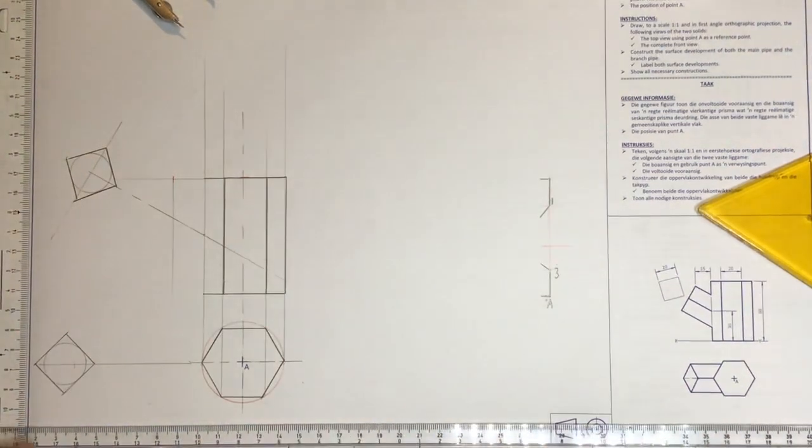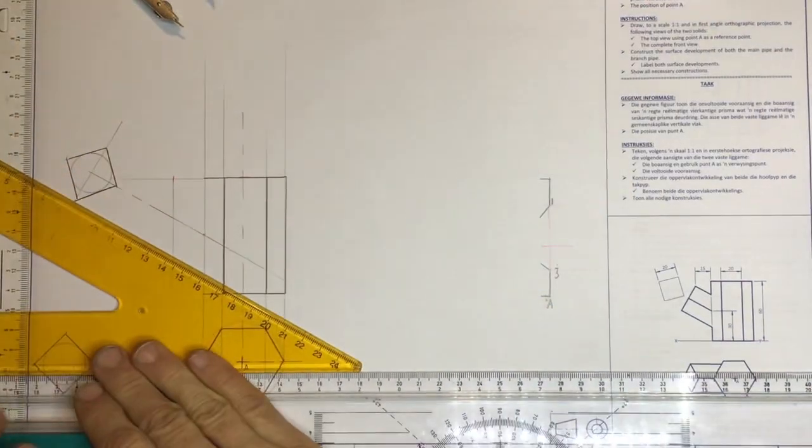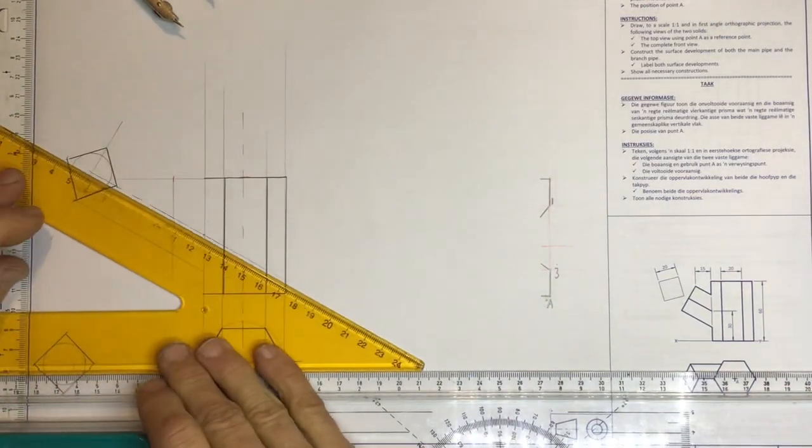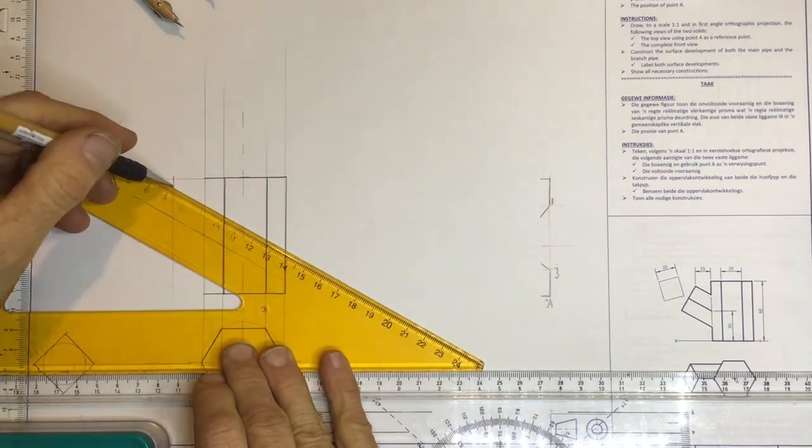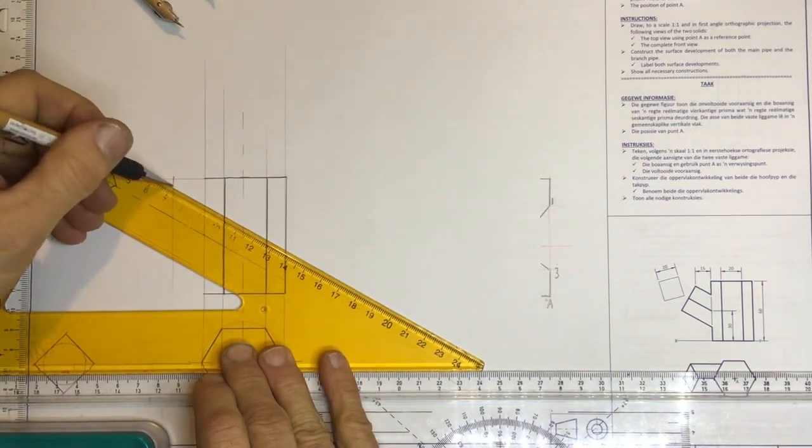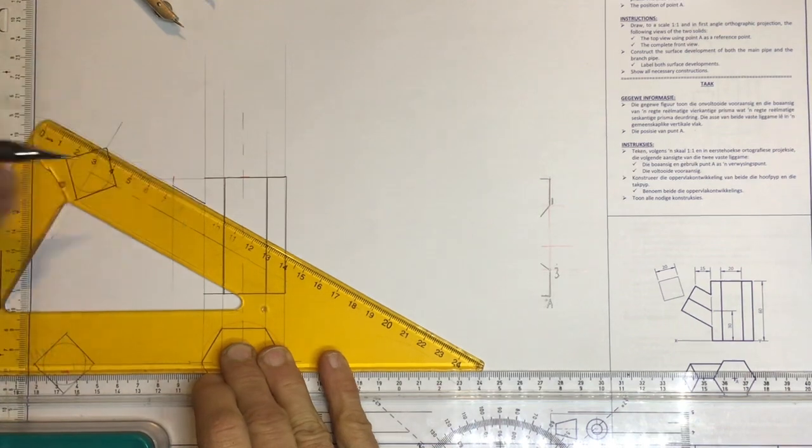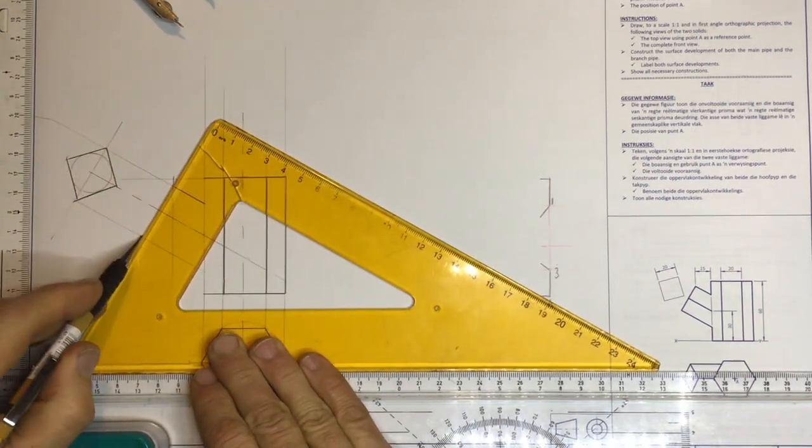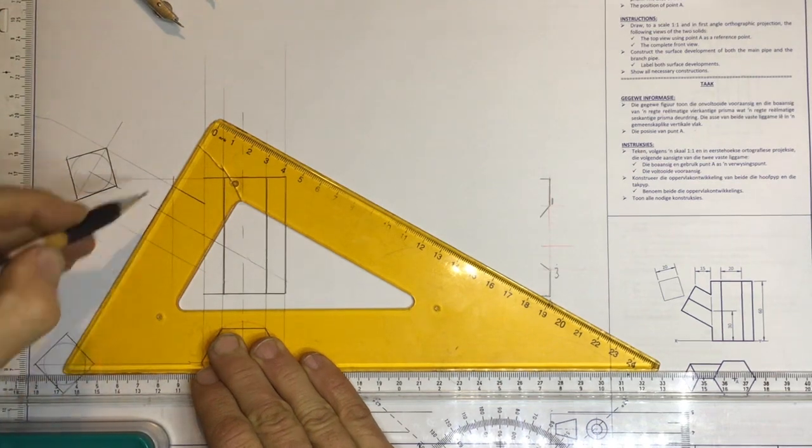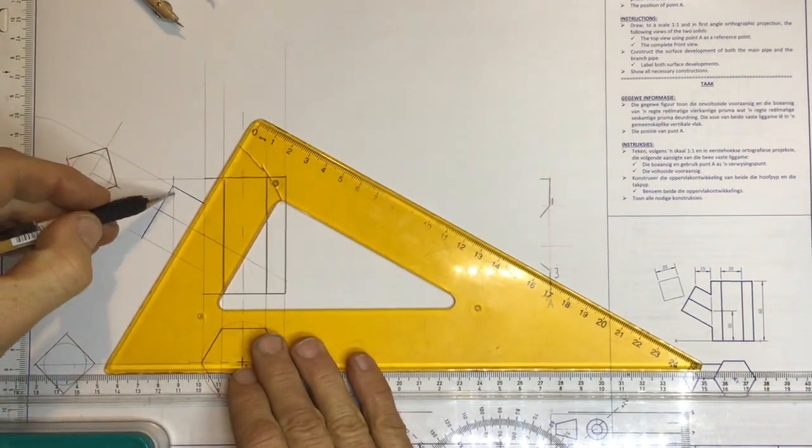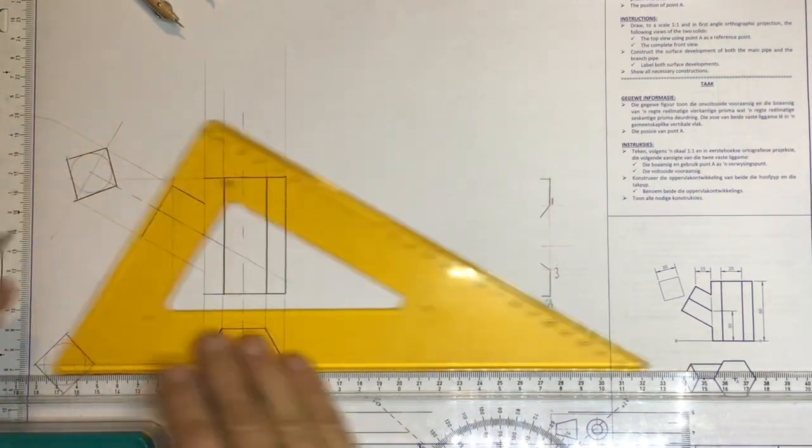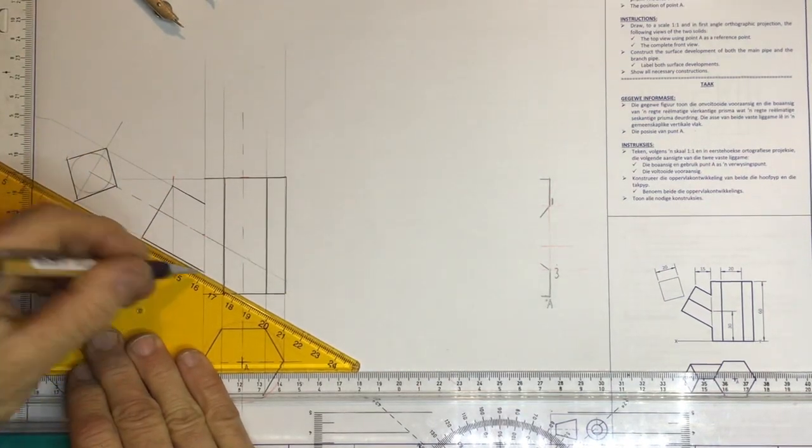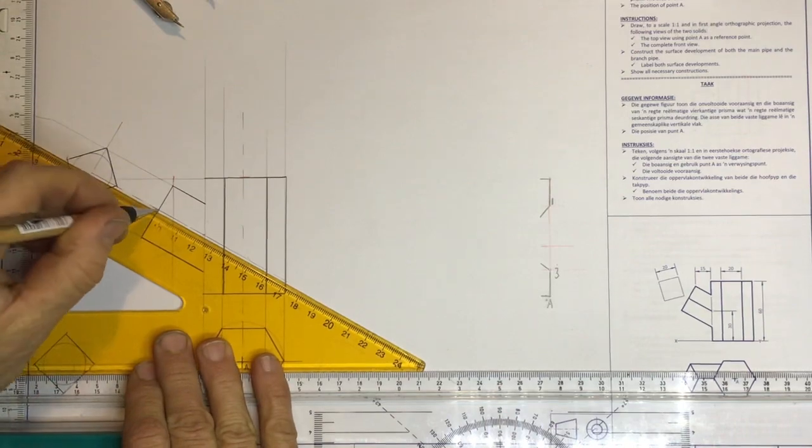Once you've got those in place, you can then take that information back onto your drawing. Taking that back. And we can then draw that line going in there. We can take a line going from there to there. That is 15 millimeters across, dropping it down onto that point. Draw that in there. We can draw that in there. And that can be drawn in.